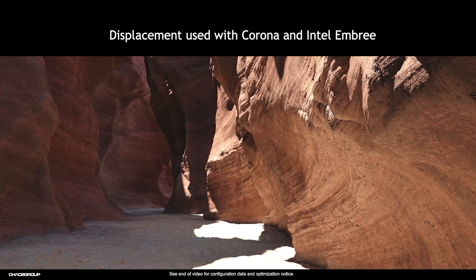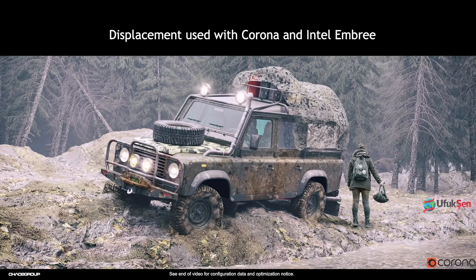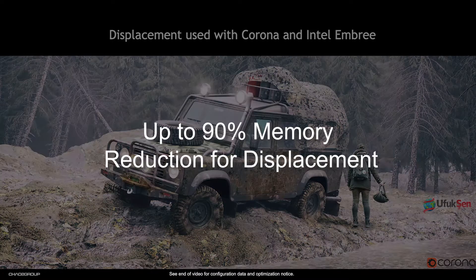When they heard of memory requirement needs being high on displacement, they produced a new Displace Quad Primitive that we put into Corona. The result? We got a 90% reduction in memory, which meant that Corona users could now use displacement almost for free — really enriching their scenes without increasing their RAM.